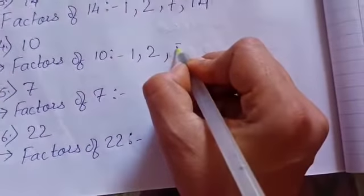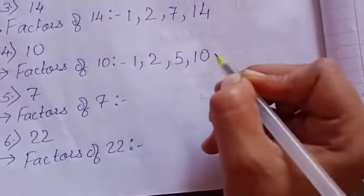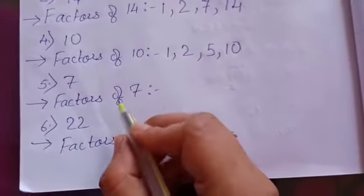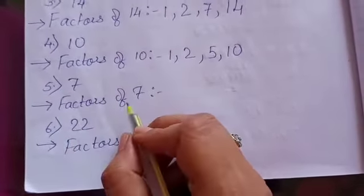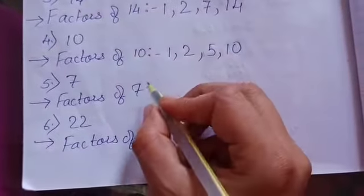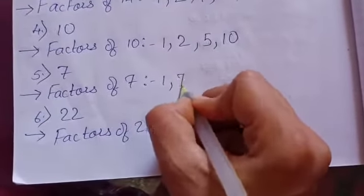Same way, 7. The factor of 7 is going in table 1 and 7.